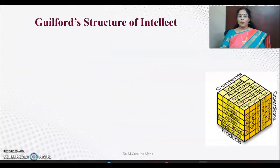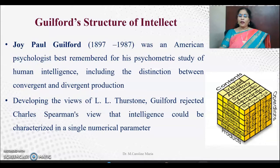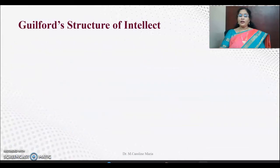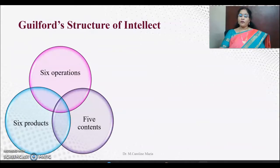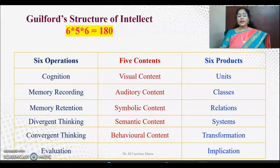Then Guilford came forward and created a three-dimensional model. He said that intelligence is a three-dimensional process. He was an American psychologist, best remembered for his psychometric study of human intelligence, including the distinction between convergent and divergent production. He rejected Spearman's two-factor theory as well as Thurston's theory, and proposed that three dimensions were necessary for accurate description. He said there are six operations on five content and they produce six products in a three-dimensional format, with 180 factors responsible for each person's intelligence.